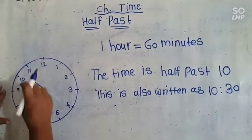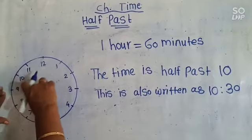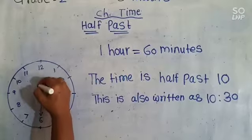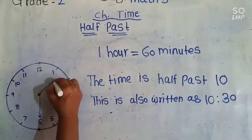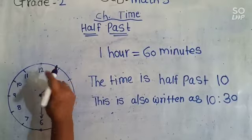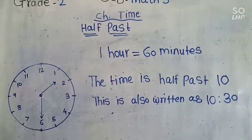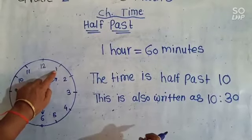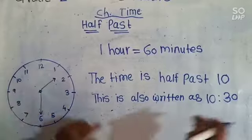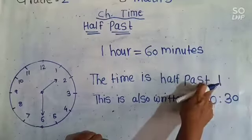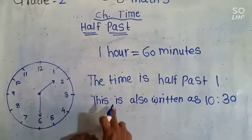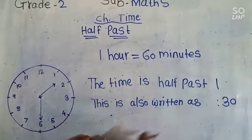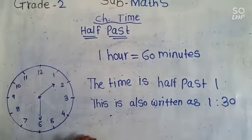We will take one more example. Here the minute hand is on 6 and the hour hand is in between 1 and 2. That time the time is half past 1. The time is half past 1, and this is also written as 1:30.